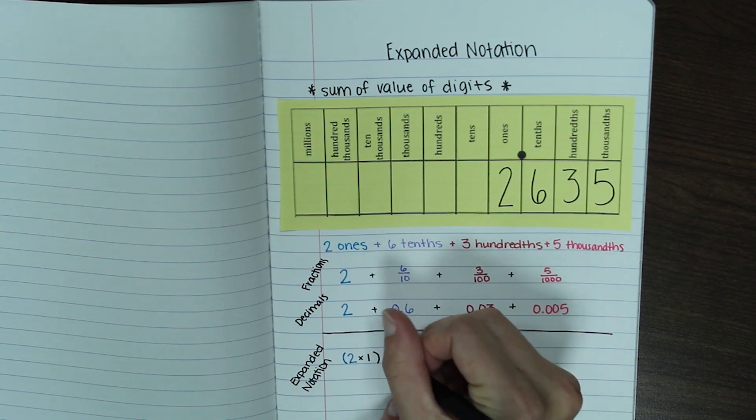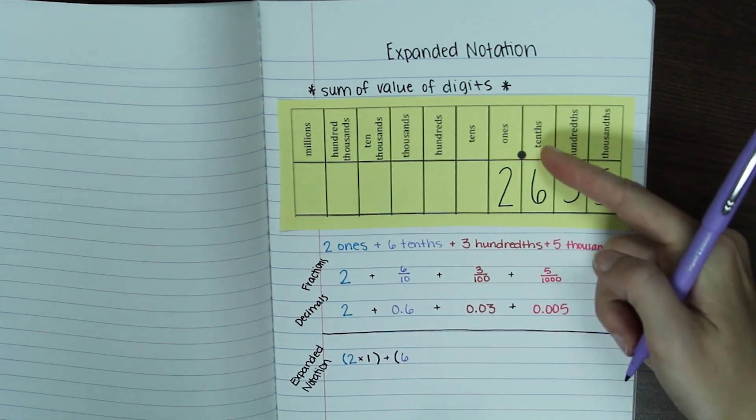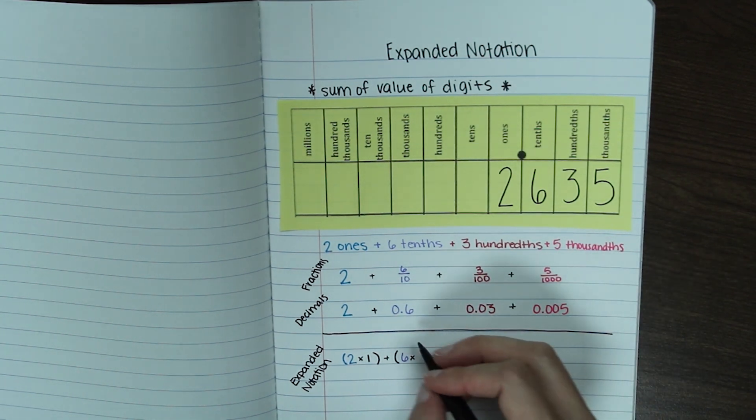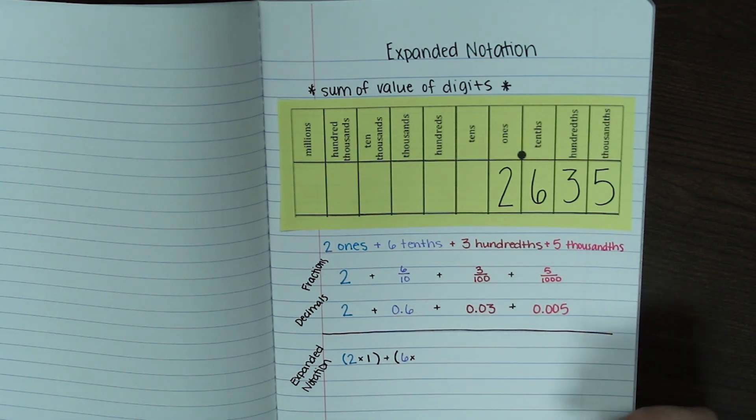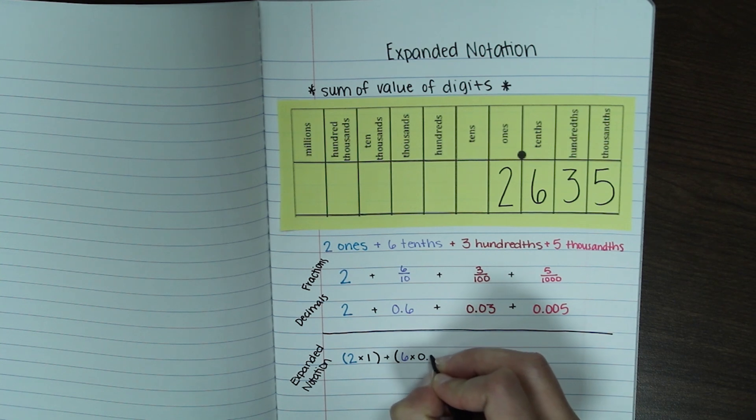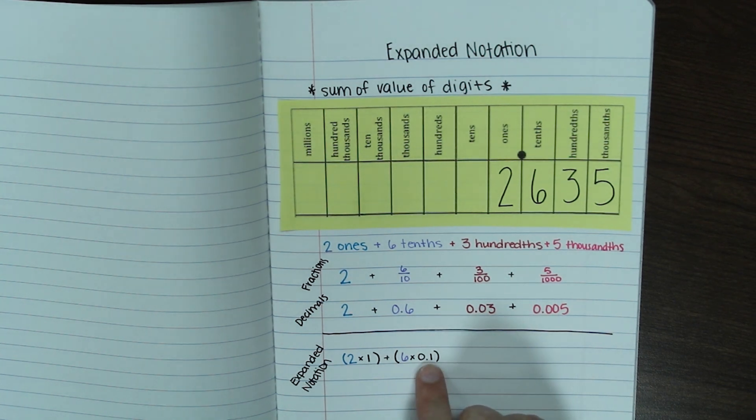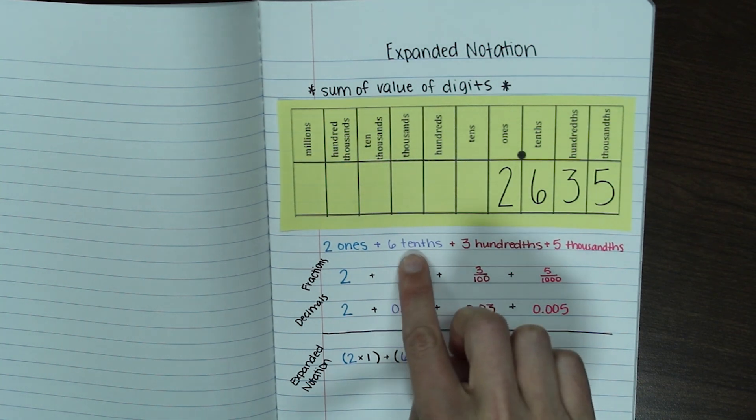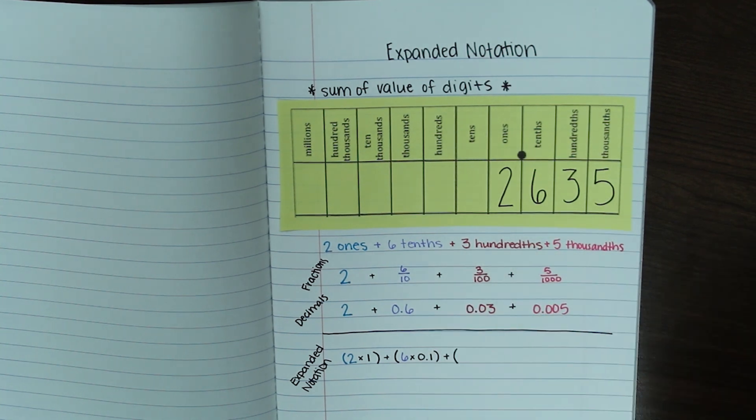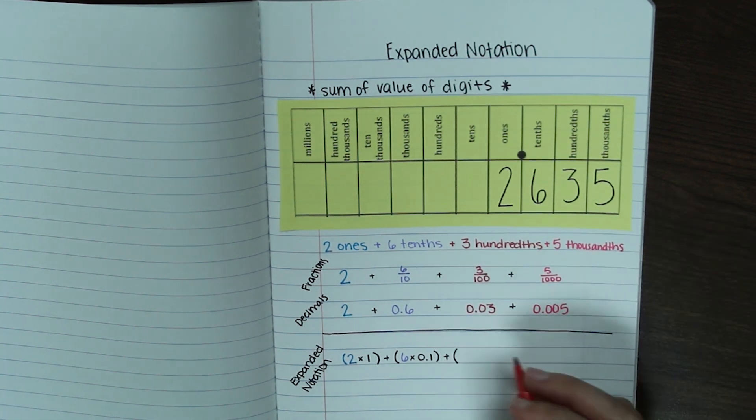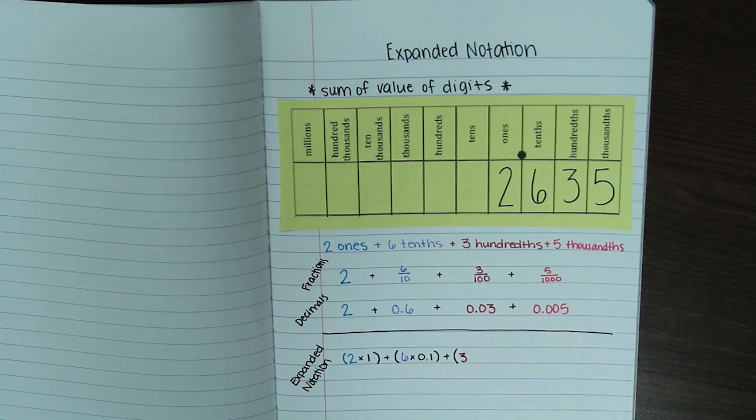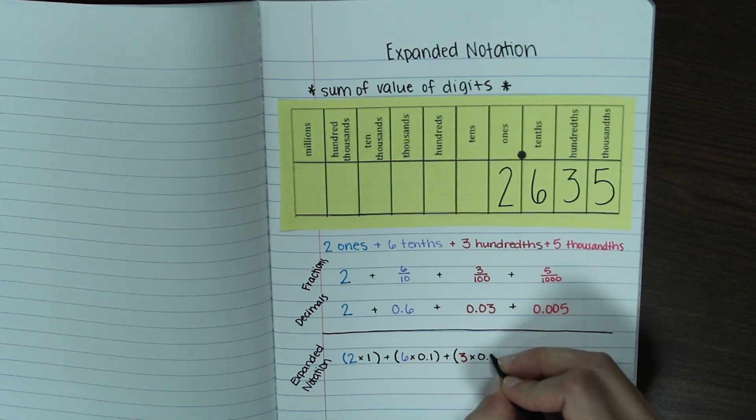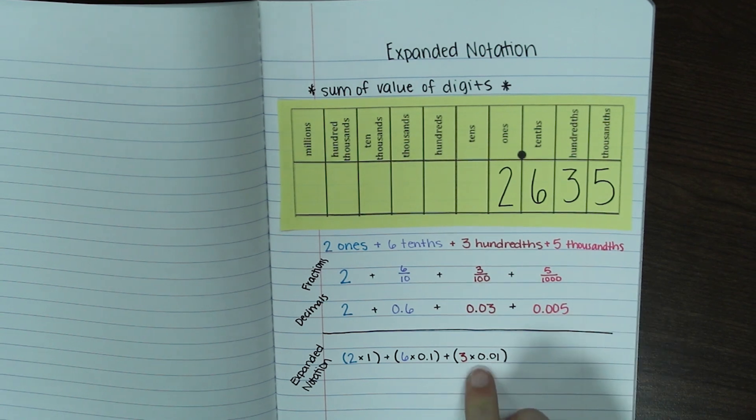Our six is in the tenths place. So we're going to write that as six times one tenth because it's the tenths place. You can write that as a fraction or a decimal. Normally you see it as a decimal, so that's what I'm going to use. And I'll just put a one in the tenths place. The six times one tenth is going to give me the six tenths that I had up here. And my three is in the hundredths place. So I'll say the value is three times the hundredths place. So I'm going to put a one in the hundredths place. And this would equal my three hundredths.